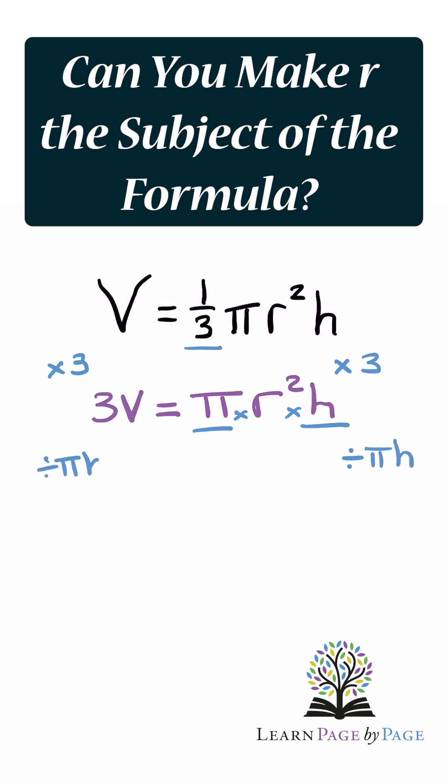Remember, whatever you do to one side of the equation, you have to do to the other. That gives us 3V divided by pi h, and on this side we are just left with r squared.